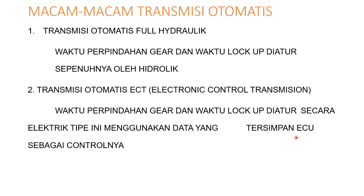Macam-macam transmisi otomatis dapat dibedakan menjadi dua. Yang pertama adalah transmisi otomatis full-hydraulic, di mana perpindahan gear dan waktu lock-up diatur sepenuhnya oleh hidrolik. Kemudian yang kedua adalah transmisi otomatis ECT, Electronic Control Transmission, di mana waktu perpindahan gear dan waktu lock-up diatur secara elektrik menggunakan data yang tersimpan dalam ECU sebagai kontrolnya.